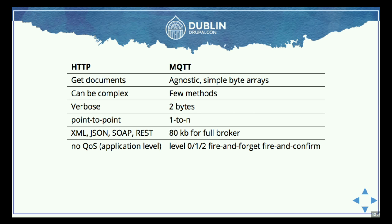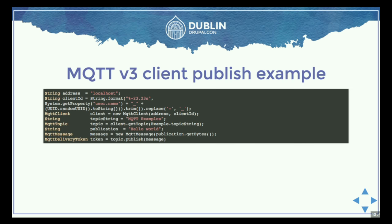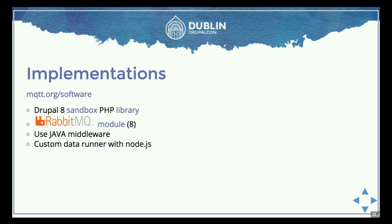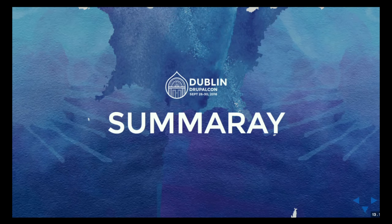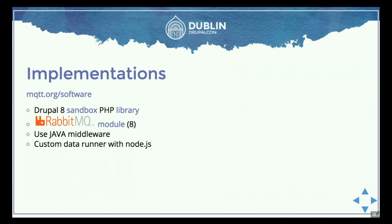You only need 80 kilobytes for a full back-and-forth broker connection. A packet would look like 'hello world' — just about there. The last time I gave this presentation there weren't that many implementations. Now we already see a nice Drupal 8 sandbox on Drupal.org that implements MQTT, a good PHP library for it, and also a Rabbit MQTT — an open source tool to exchange this kind of data. There's loads of Java middleware, of which two are open source. And you can also make a custom Node.js data runner that makes sense out of all this sensor data and acts upon your web solution.